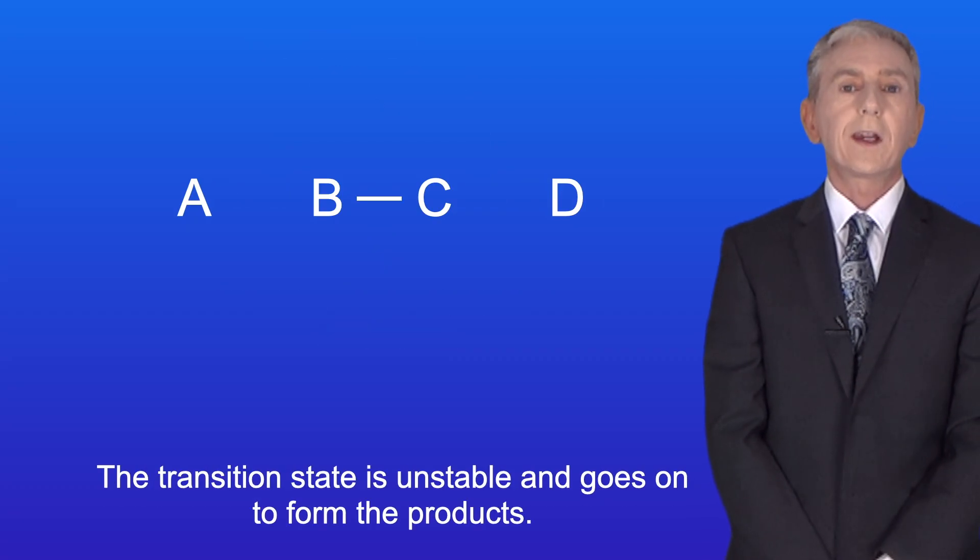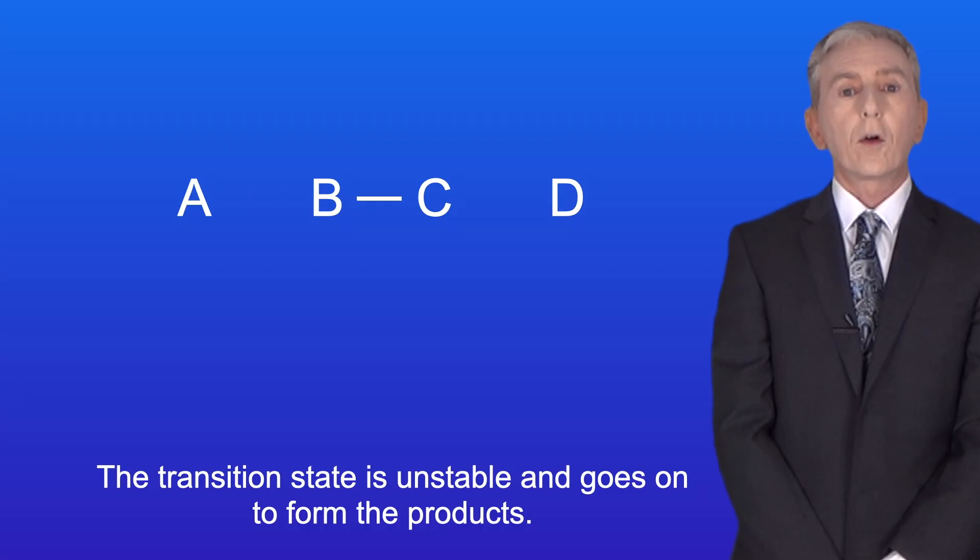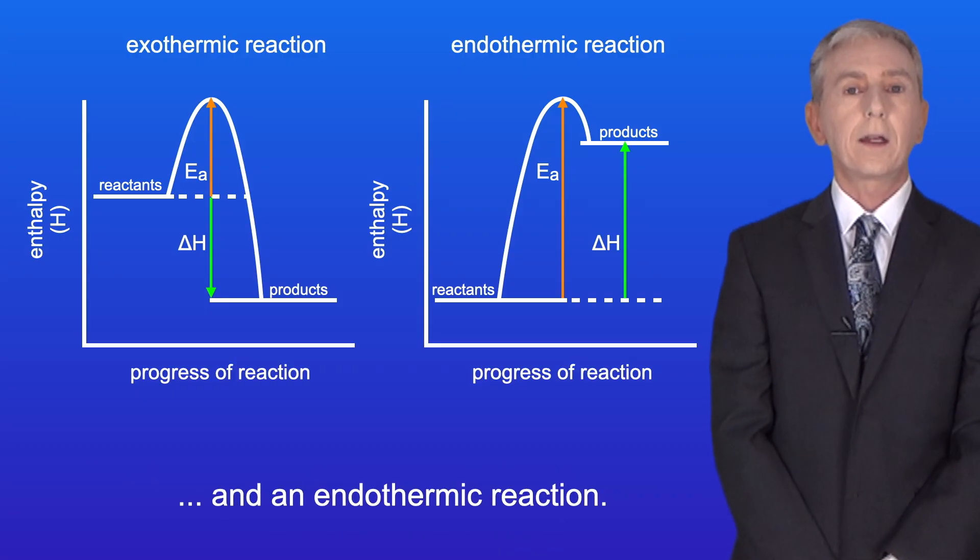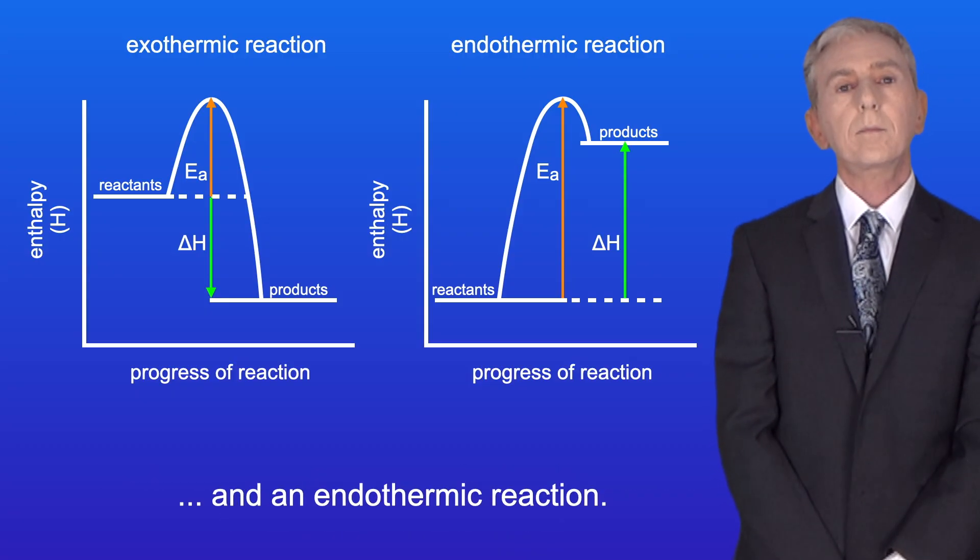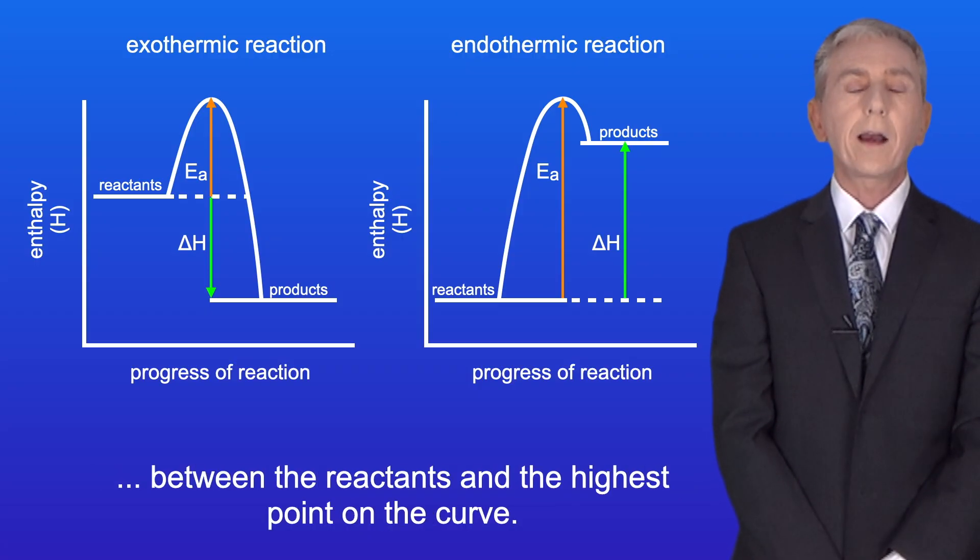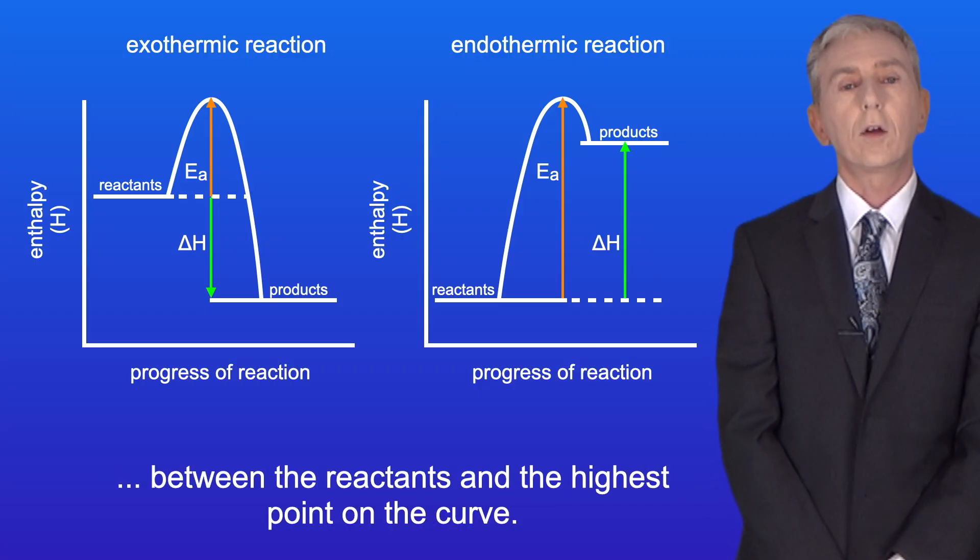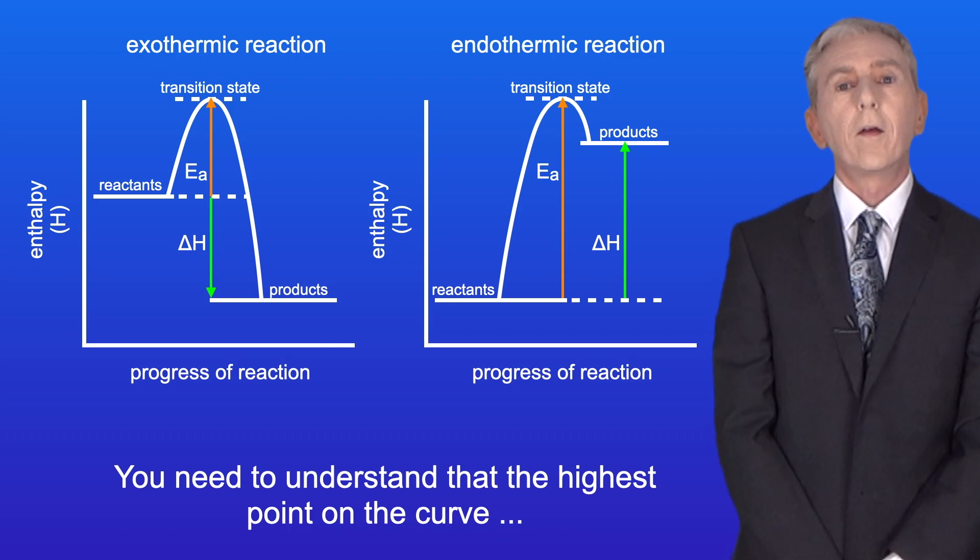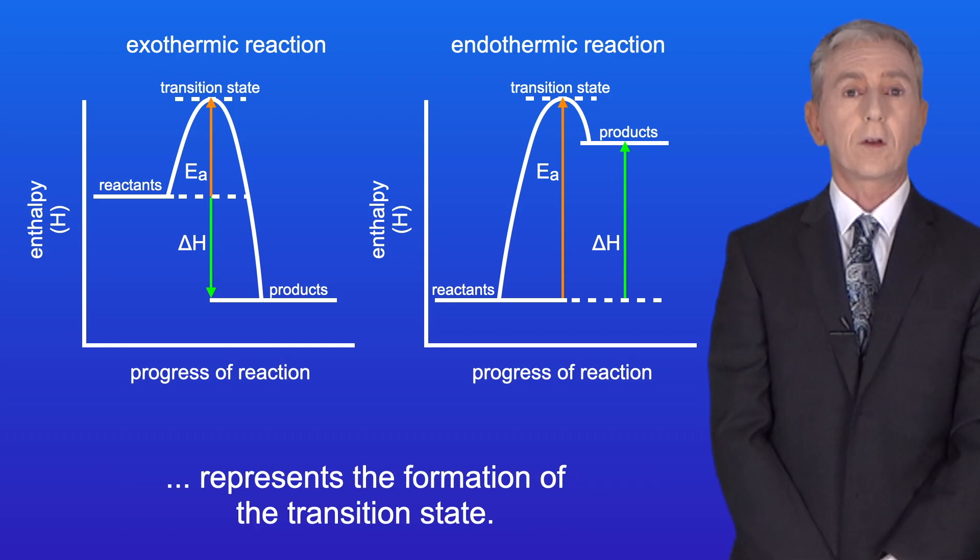Now the transition state is unstable and goes on to form the products. I'm showing you here an enthalpy diagram for an exothermic reaction and an endothermic reaction. The activation energy or EA is the enthalpy difference between the reactants and the highest point on the curve.